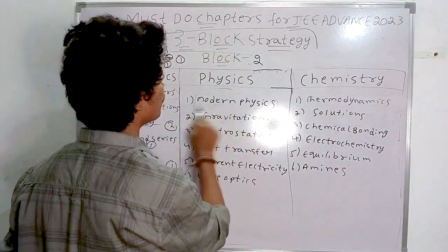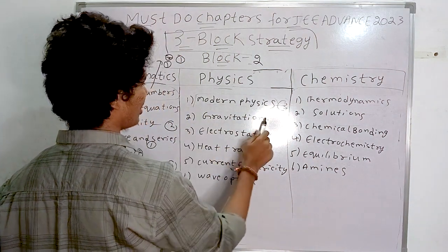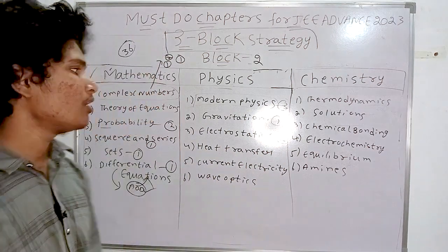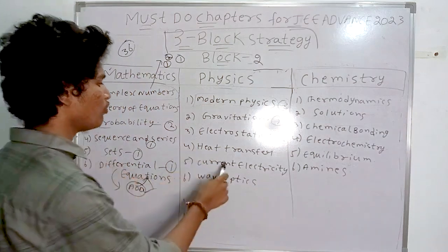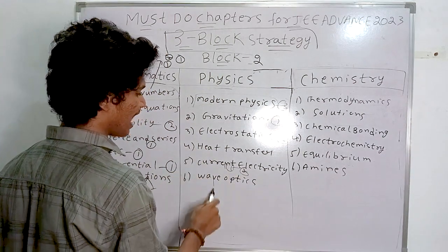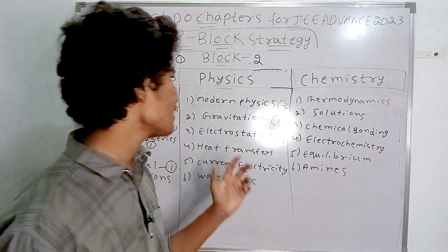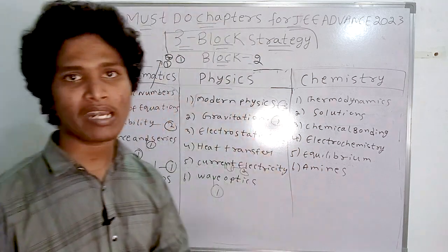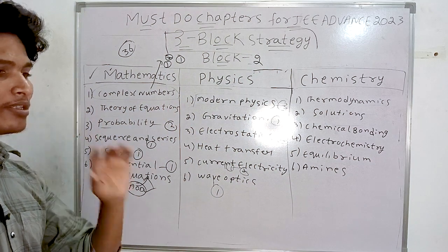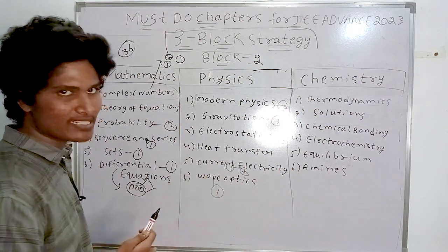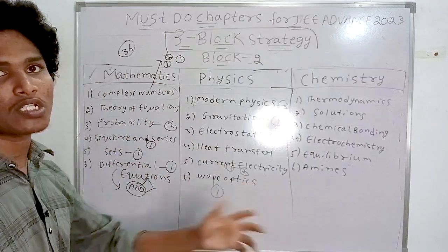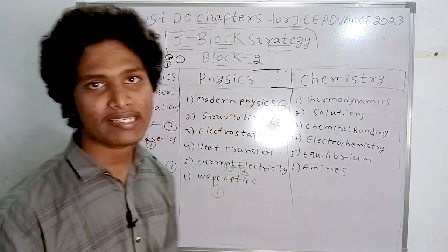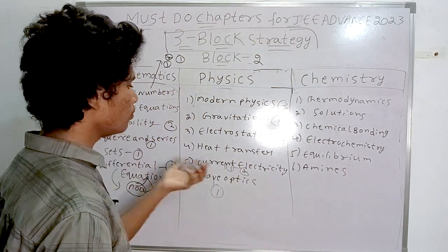Block two physics: modern physics — three simple questions; electrostatics — two questions; gravitation — one question; heat transfer/calorimetry — one question; current electricity — one to two questions; wave optics — one question. For current electricity, prepare not just equivalent resistance but also how to find branch current, using KVL, KCL, and Ohm's law.